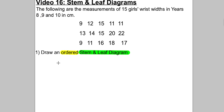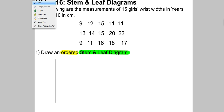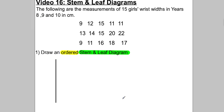The first thing you do is you draw a bar like that. Only one number can go in what's called the leaf bit — the number that goes in the leaf bit is the second digit. In front of nine is obviously zero-nine, so we're going to have zero in the stem. We're going to have a one in the stem and we're going to have a two in the stem.